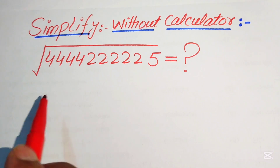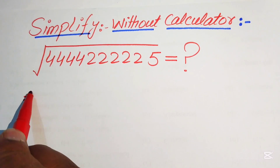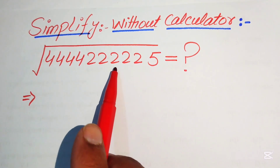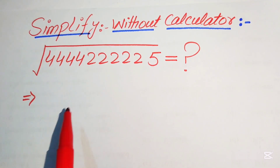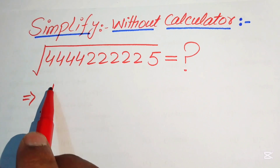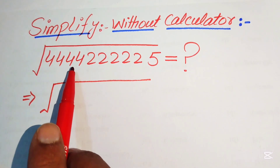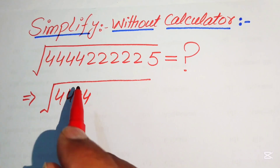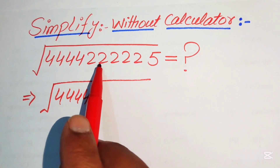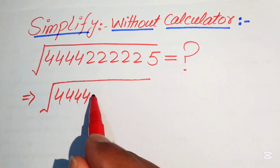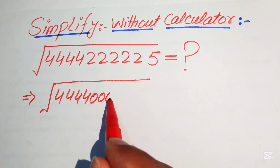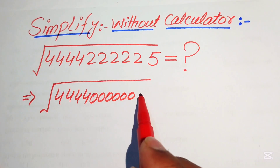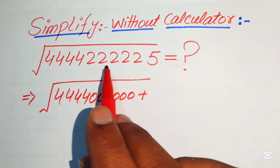The very first step is to break this 10-digit number into scientific notation. We write 4444 followed by 6 zeros, then add the number formed by two 5 times of 2 multiplied by 5.